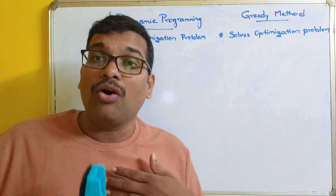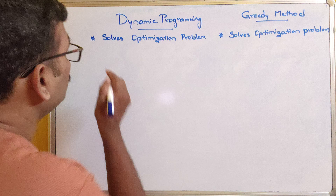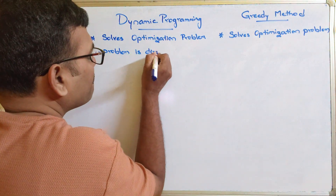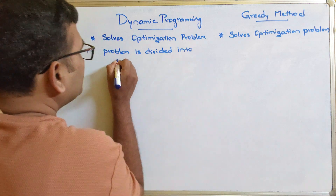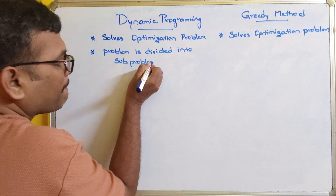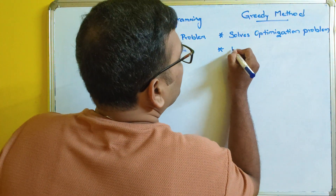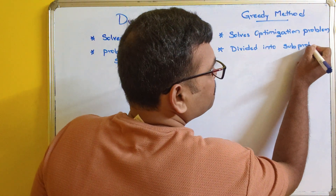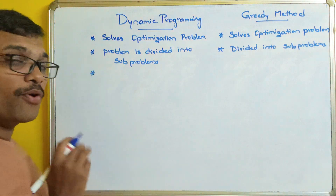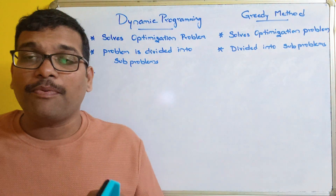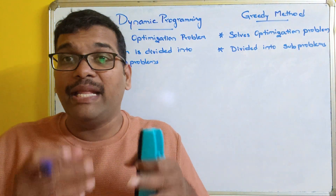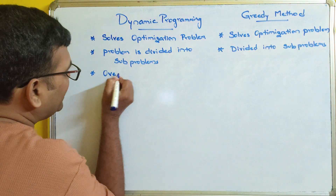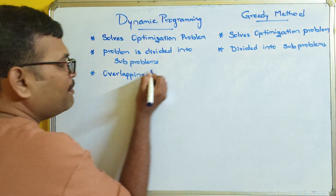The second difference is also the same: the complex problem is divided into subproblems. In dynamic programming, these subproblems depend on one another — there is a dependency among subproblems. We usually call these overlapping subproblems, since there is an overlapping nature among them.